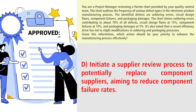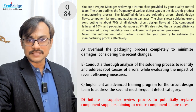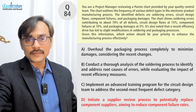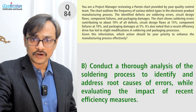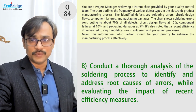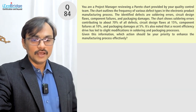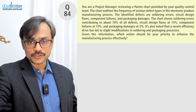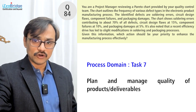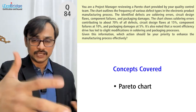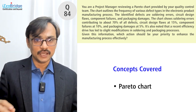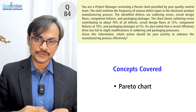Option D says: initiate a supply review process to potentially replace component suppliers, aiming to reduce component failure rate. But component failure is only 10 percent. So in a straightforward manner, I go with Option B because I focus on what gives the maximum impact. This question maps to process task seven — plan and manage quality of your products and deliverables — and is specifically testing whether you understand quality tools, particularly the Pareto chart.